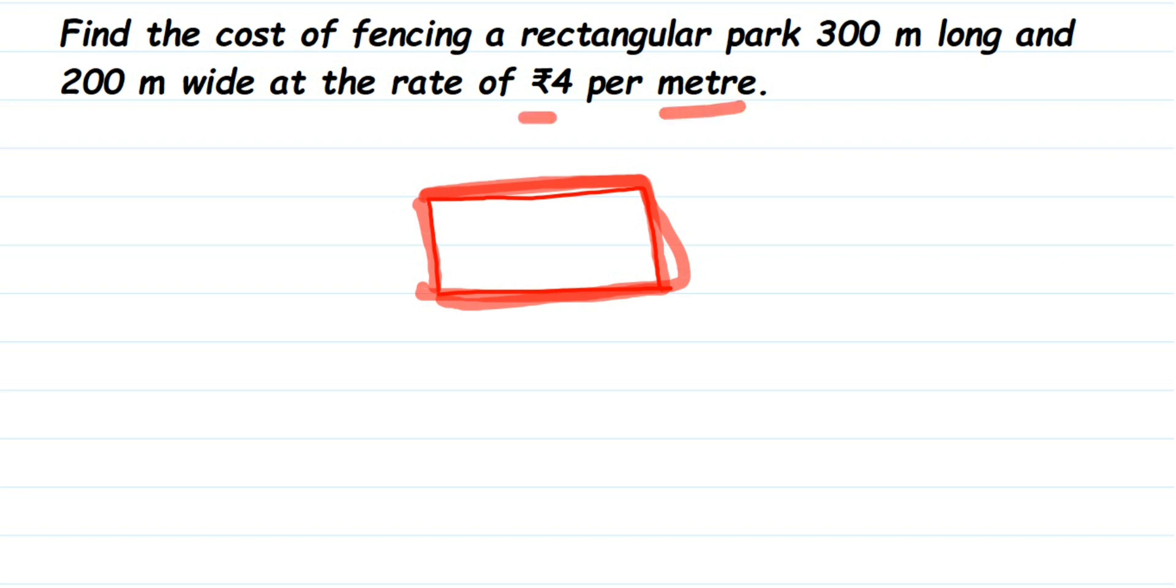So here they're charging per meter 4 rupees, so we're going to find out the total charge or total cost of it. We're going to write down what we know from the question. We know length and breadth. So l represents the length. Length is 300 meters, and breadth, which is width, is equal to 200 meters.